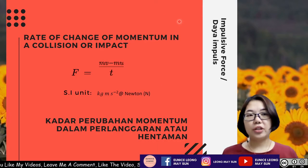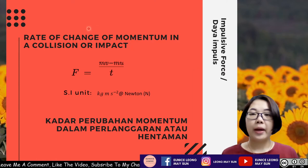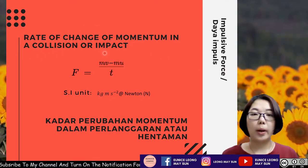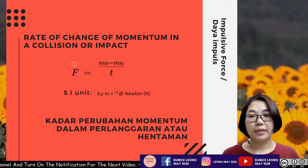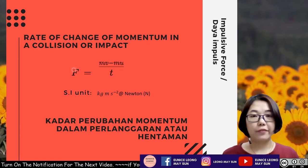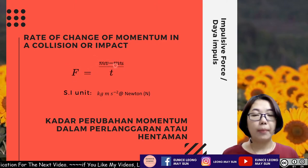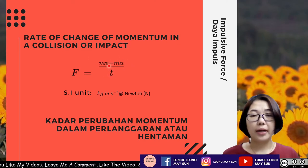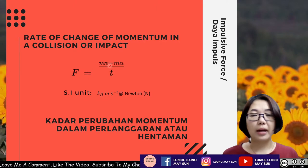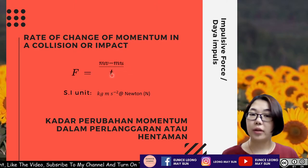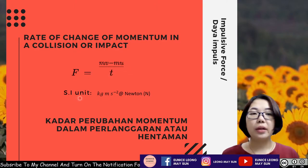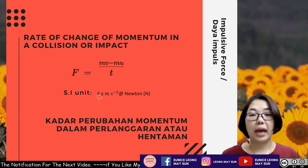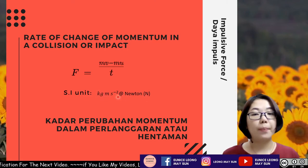The definition of impulsive force: impulsive force is the rate of change of momentum in a collision or impact. F stands for impulsive force. The formula is F = (mv − mu) / t, where mv − mu is the change of momentum divided by time. The SI unit for impulsive force is newtons, or in base units, kg·m/s².